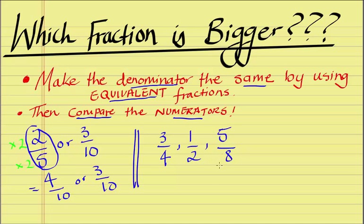8 is the lowest common denominator here. So we usually look at the biggest denominator and we try to see if we can convert these other two fractions to have the same denominator.